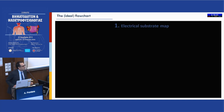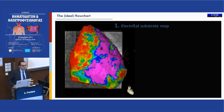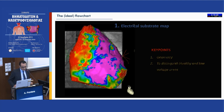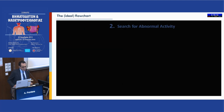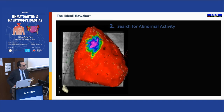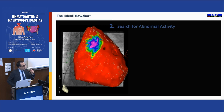The ideal flowchart in the setting of VT ablation is first to build up an electrical substrate map. You want to create the geometry and you want to understand where healthy tissue is from the scar, and then you want to study the abnormal propagation. You want to understand exactly where the areas of slow conduction are. This is what we do at our institution — the red represents all the potentials inside the QRS.